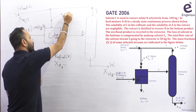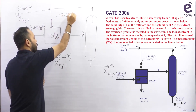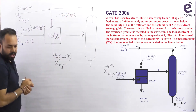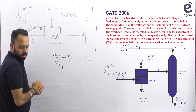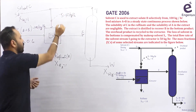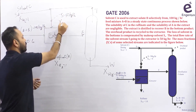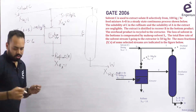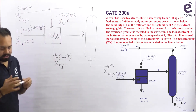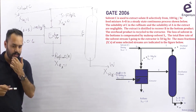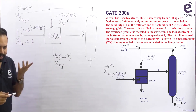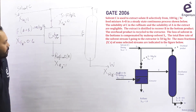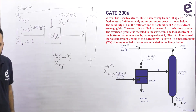The flow rate of stream S going to the extractor is 50 kg per hour, and X_sA equals 0. This is the data given in the problem.